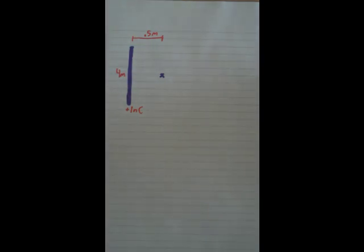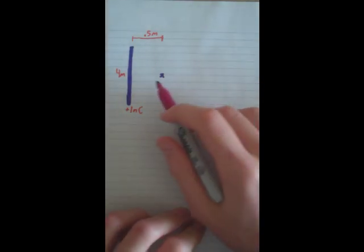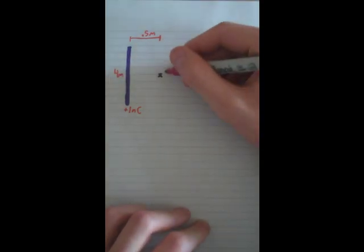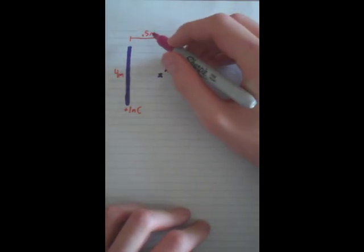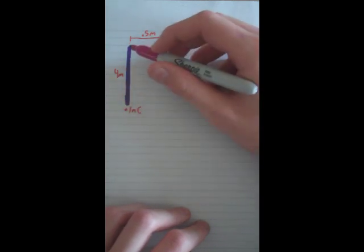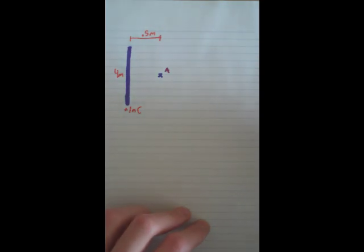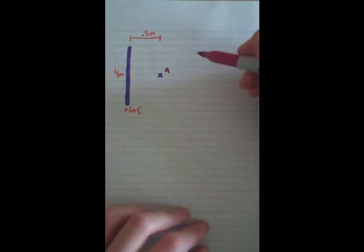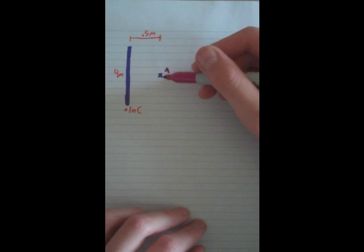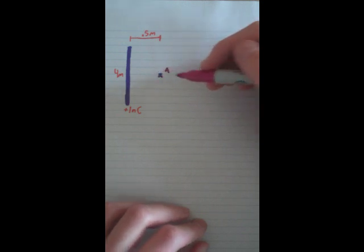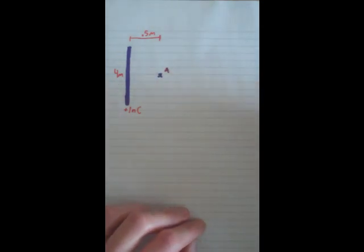We'll be trying to find the electric field right here — I'll just label it as A. It is 0.5 meters away. The rod is 4 meters long and it has a charge of 1 nanocoulomb. For the majority of rod-like problems, they'll all be finding it at a point where it's in the middle, or very close to the middle of the rod.